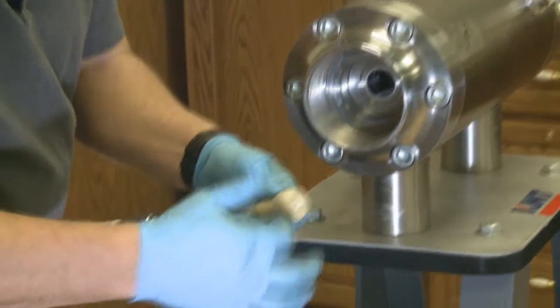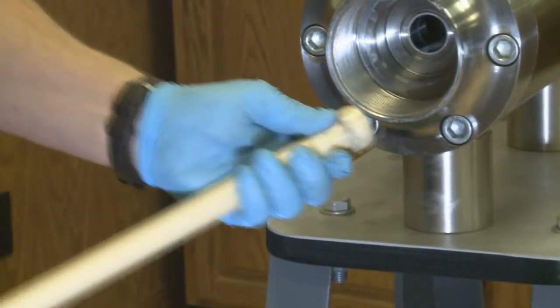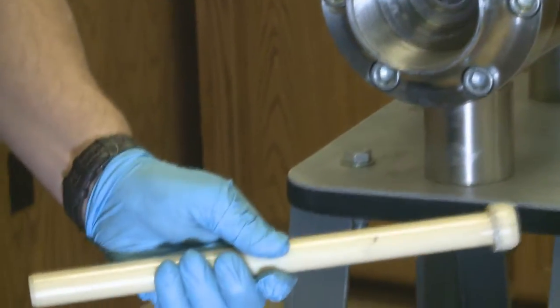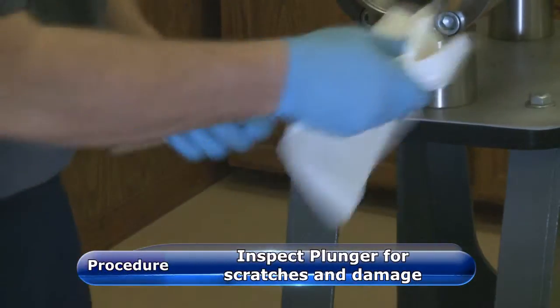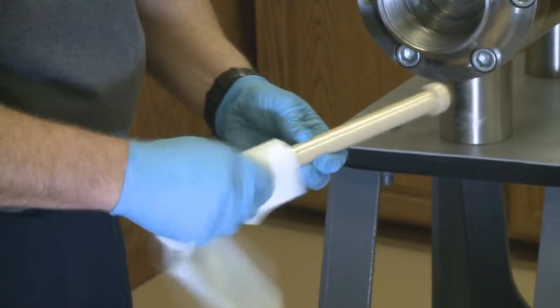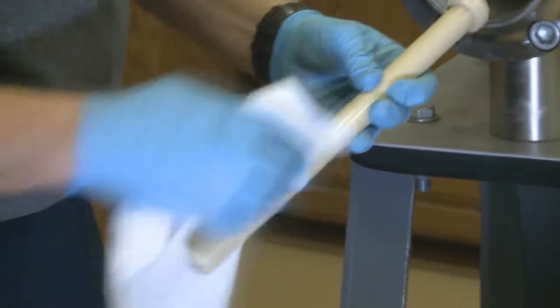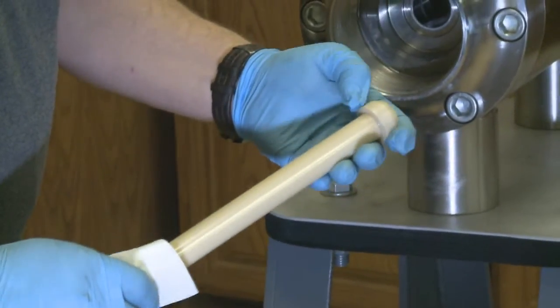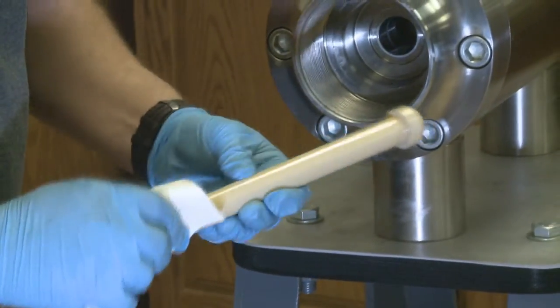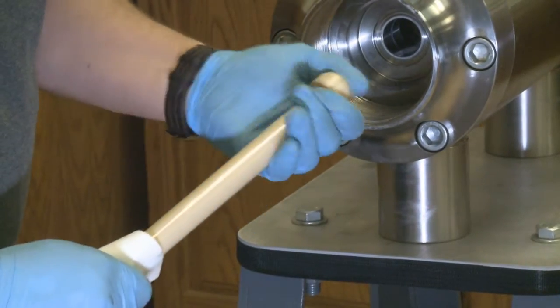Notice it's tapered on the end. Always inspect the plunger for scratches. Clean it off really good. If you can get your fingernail anywhere on the plunger, there's a good chance your seals won't hold. If they're not too bad, you can send them back in and we can rework it or you can replace it.